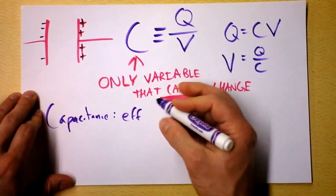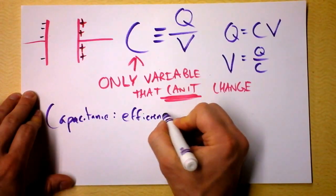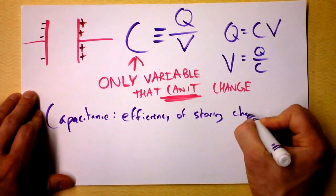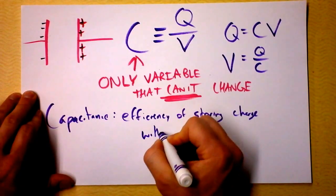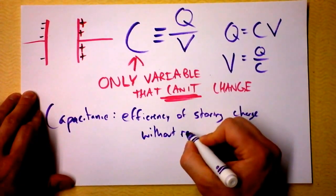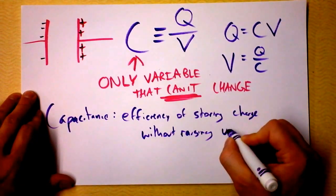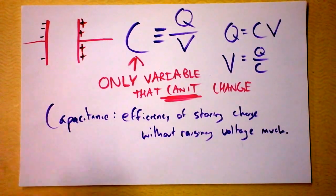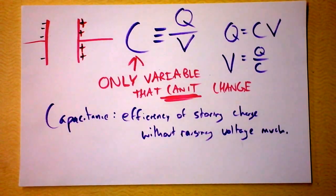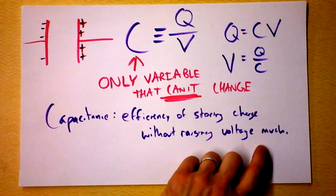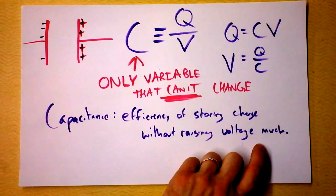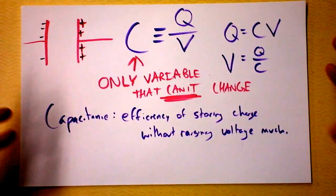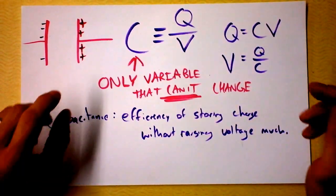So it's really an efficiency of storing charge. I'm going to call capacitance efficiency of storing charge without raising voltage much. And the beautiful thing about that, without raising voltage much, means without raising the energy per charge very much. So it's an efficient way to store charge. Turns out it's also an efficient way to store energy.